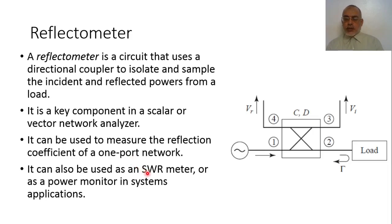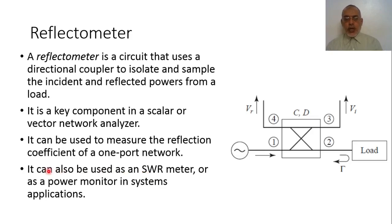The standing wave ratio can be represented as (1 + |Γ|) / (1 − |Γ|). So the reflectometer can also be used as a standing wave ratio meter or in a power monitoring system.